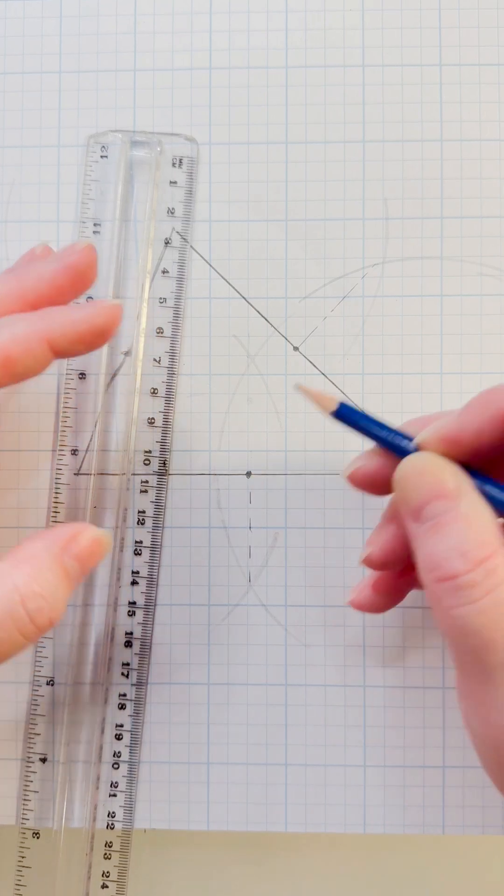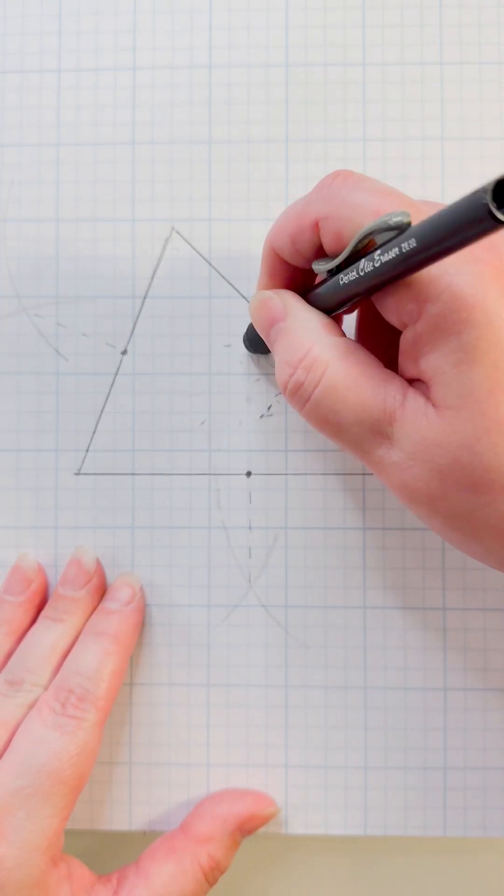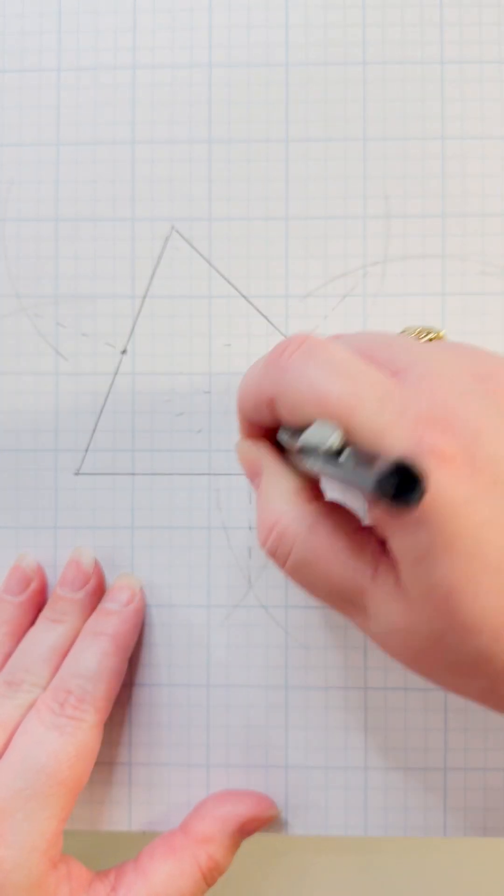That is the midpoint of that line. Now we're looking for the midpoint of the triangle as a whole.